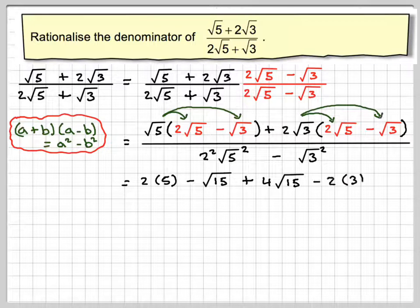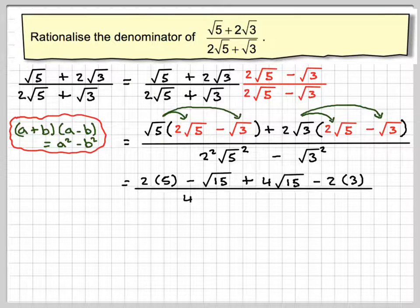And then 2 times 2, root 3 times root 3, which is 2 times 3. On the bottom, we're going to get 4 times 5 from that. Root 5 squared is the same as just 5. And then minus root 3 squared, which is 3.